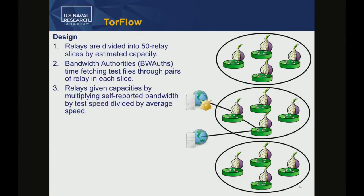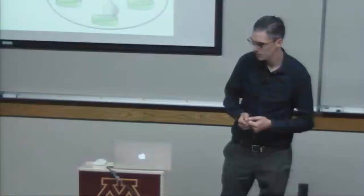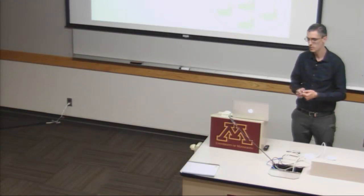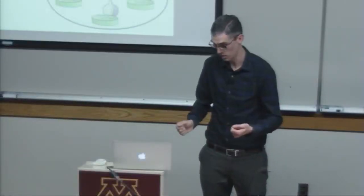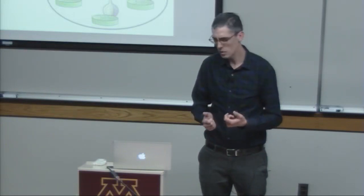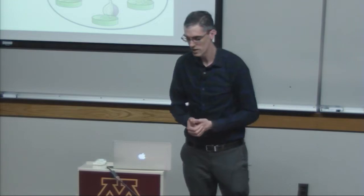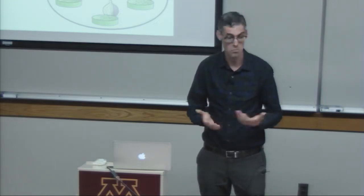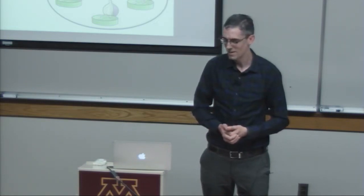Here's how TorFlow works. Relays are divided into 50 slices by estimated capacity. Bandwidth authorities choose two relays in a given slice, create a two-hop circuit, download a test file, and measure how long it took. The relay is given a relative speed by averaging all download speeds it participated in, divided by the average across all download speeds network-wide. That relative speed is then multiplied by the relay's self-advertised bandwidth.